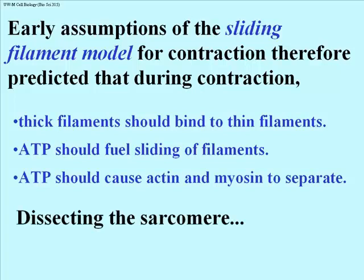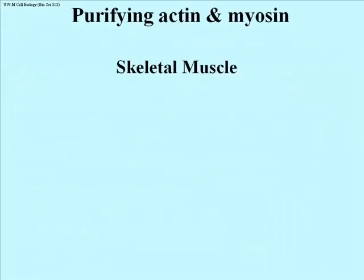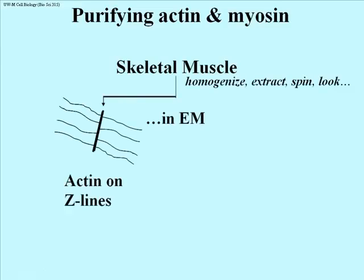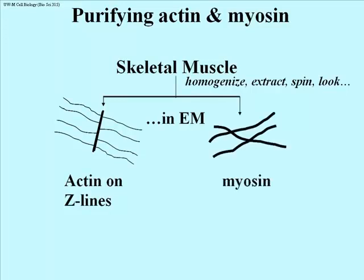How was this eventually shown? It began with an attempt to separate or fractionate muscle cells into their components to see how they interact — in other words, dissecting the sarcomere and purifying actin and myosin. You start with skeletal muscle, homogenize it, do a little extraction, begin to purify proteins, and centrifuge to separate parts based on mass. What you find are two fractions: one containing actin on Z-lines and the other containing thick filaments of the thickness predicted for myosin. So we have separated actin and myosin.